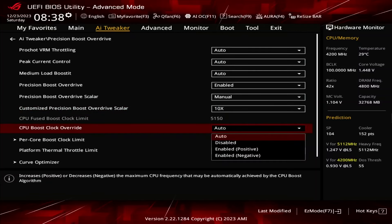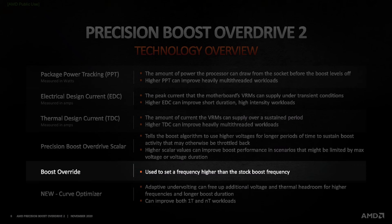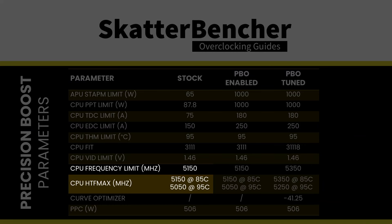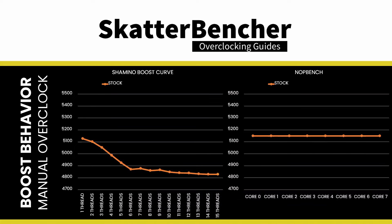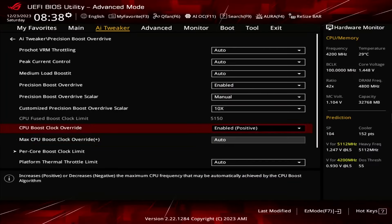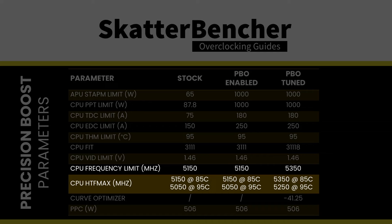Set CPU Boost Clock Override to Enabled Positive. That unlocks the ability to increase the CPU's programmed FMAX, or maximum frequency, by up to 200 MHz in steps of 25 MHz. Note that the standard FMAX for the 8700G is 5150 MHz. Remarkably, every core in this CPU can boost to an effective clock matching the FMAX of 5150 MHz at stock, and the CPU boosts to 4829 MHz when all cores are active. Set Max CPU Boost Clock Override to 200, increasing the FMAX by 200 MHz so the new FMAX is 5350 MHz.